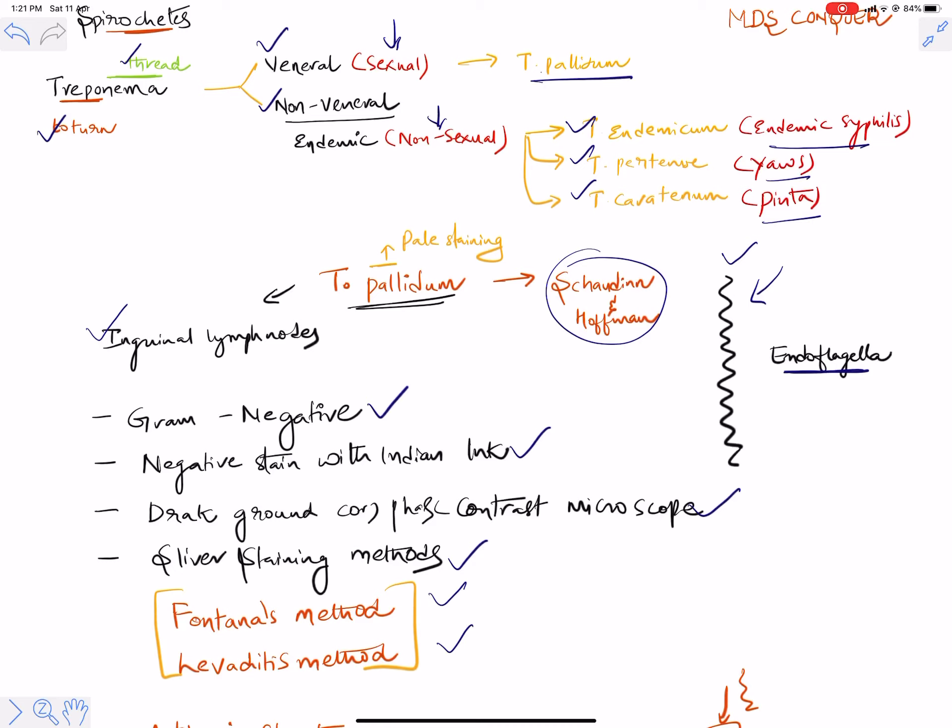For congenital syphilis: a newborn may show differences in nose shape or features, or after one to two years show mulberry molars or Hutchinson's incisors. Think about what you would do when syphilis is found in a mother or a baby, or when a patient presents in primary or secondary stage, or with neurosyphilis or cardiac syphilis in the tertiary form.